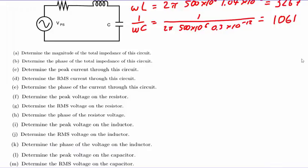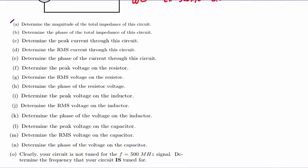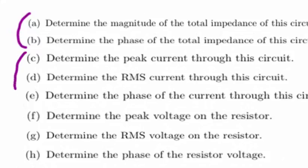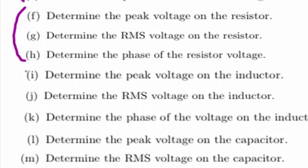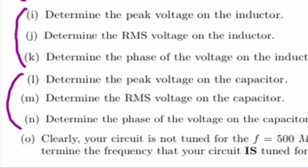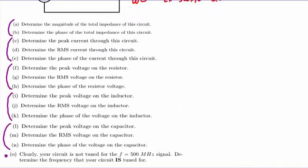Glancing through the required calculations, we can see a pattern. The first two questions deal with the total impedance of the circuit — the sum of all three impedances. The next three deal with the total current: a peak value, an RMS value, and a phase. The next three regard the voltage on the resistor, the three after that the inductor, and the three after that the capacitor — each listed as peak, RMS, and phase. Finally, there is one singular question we'll get to when the time is right.